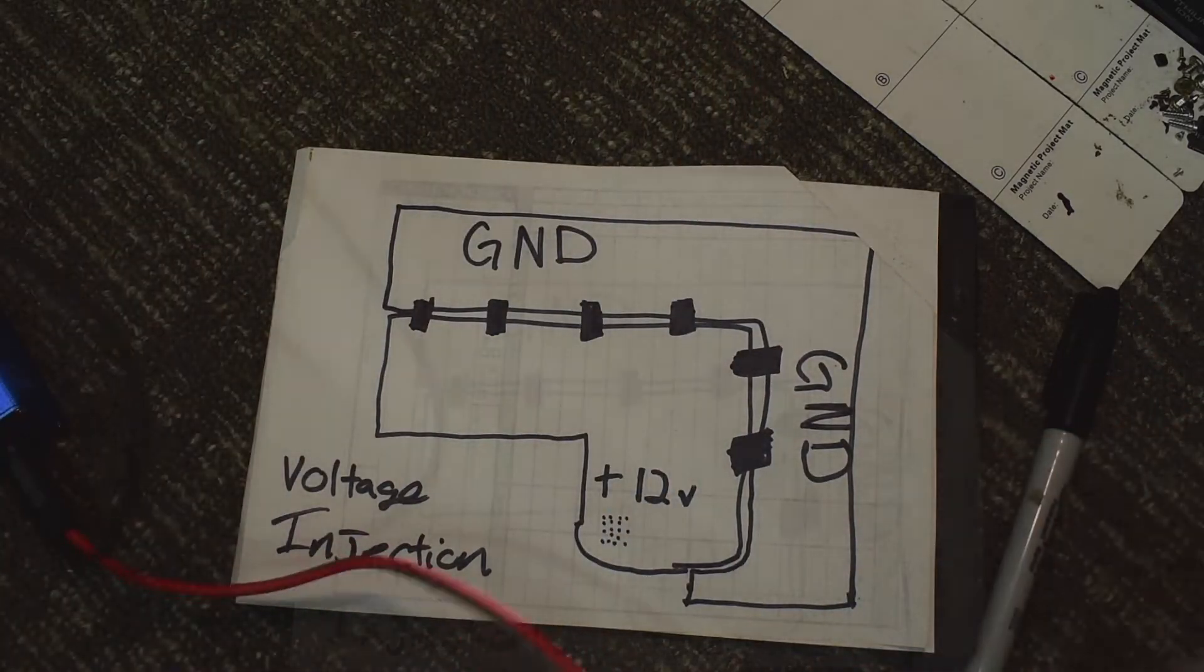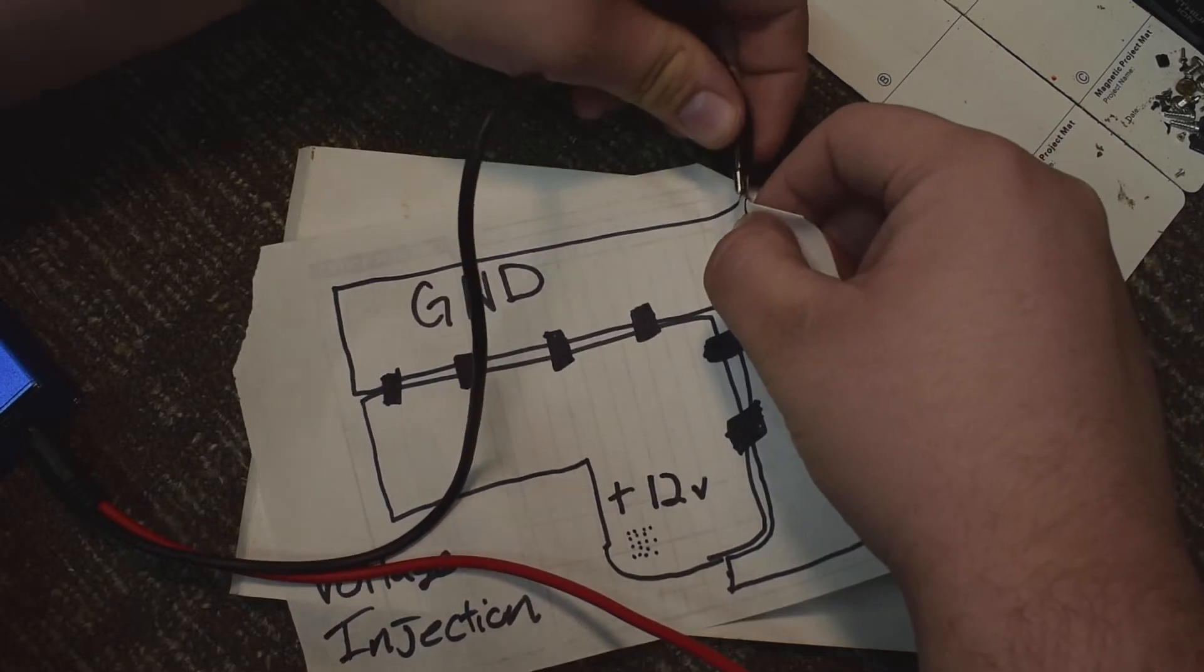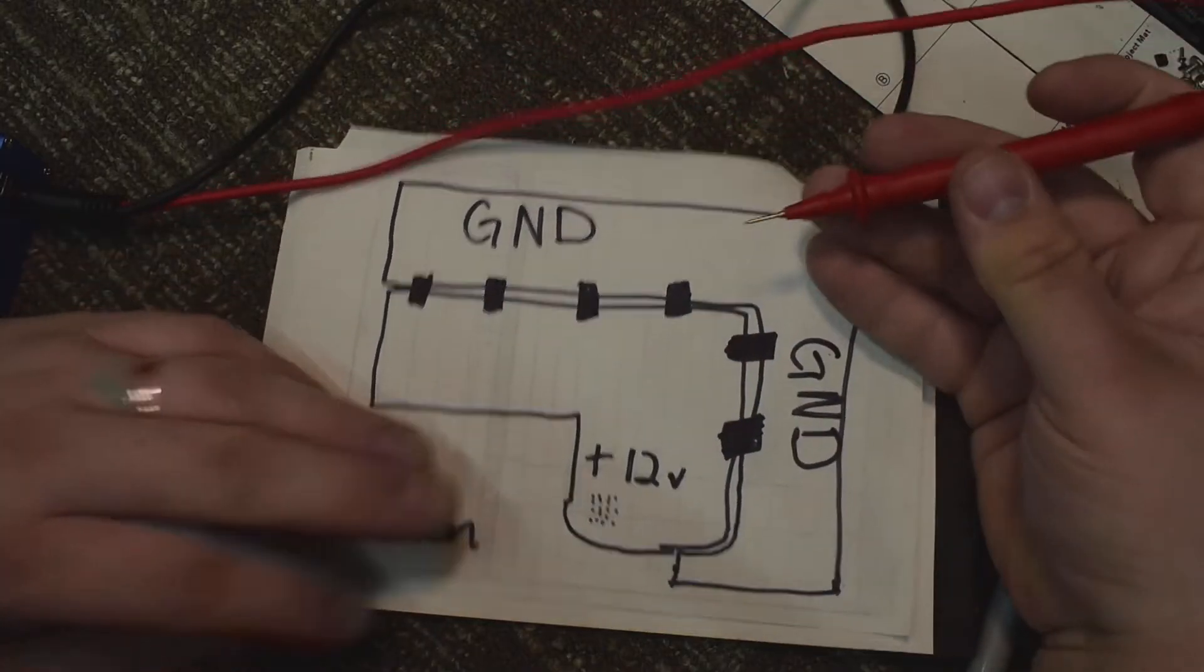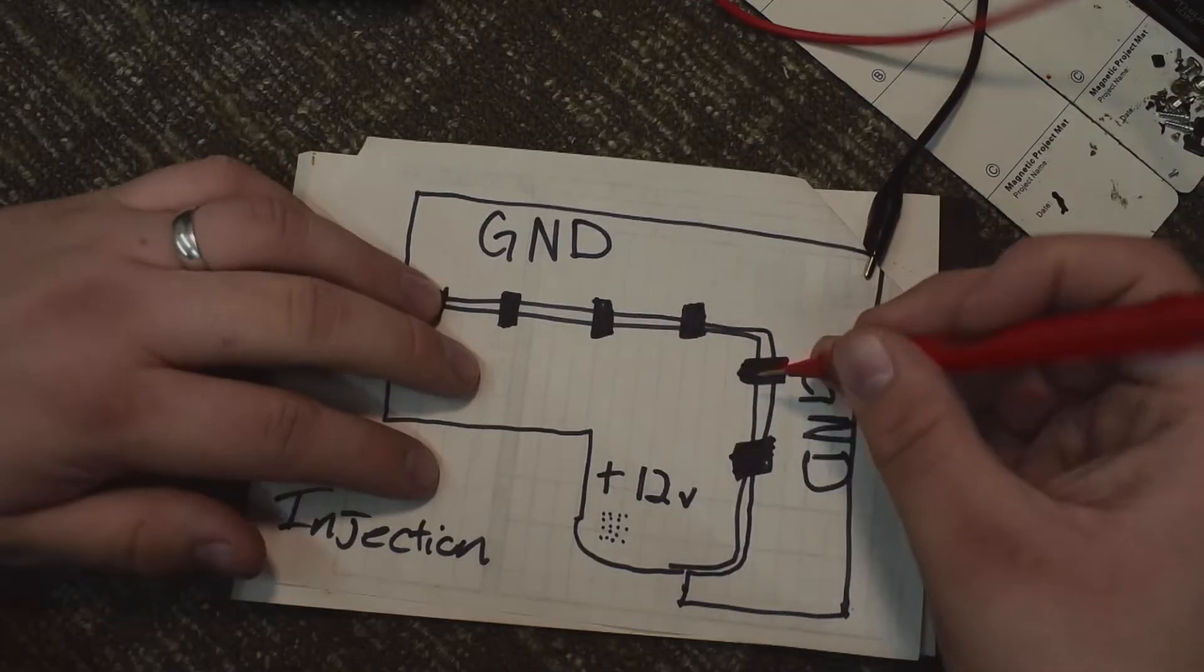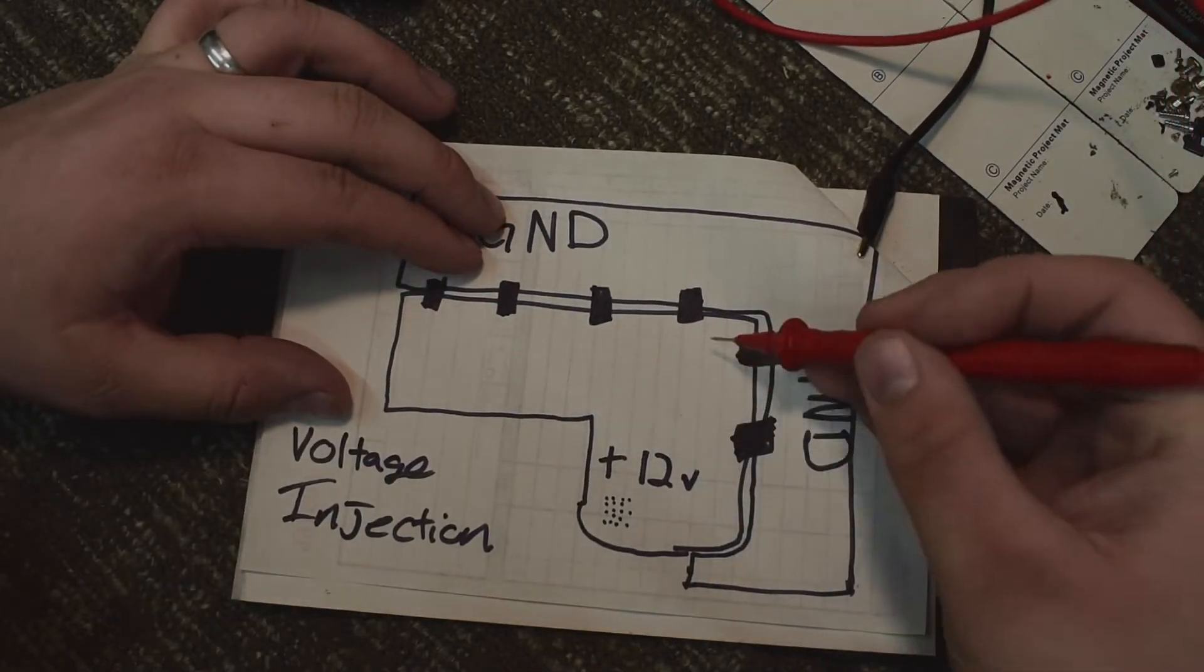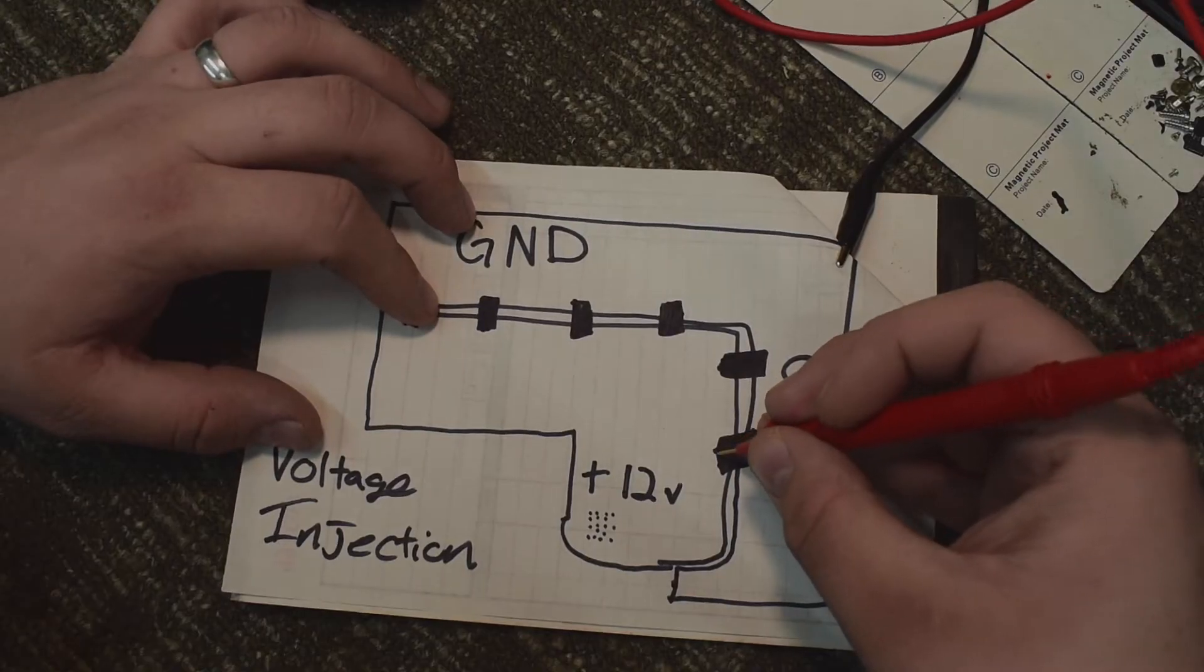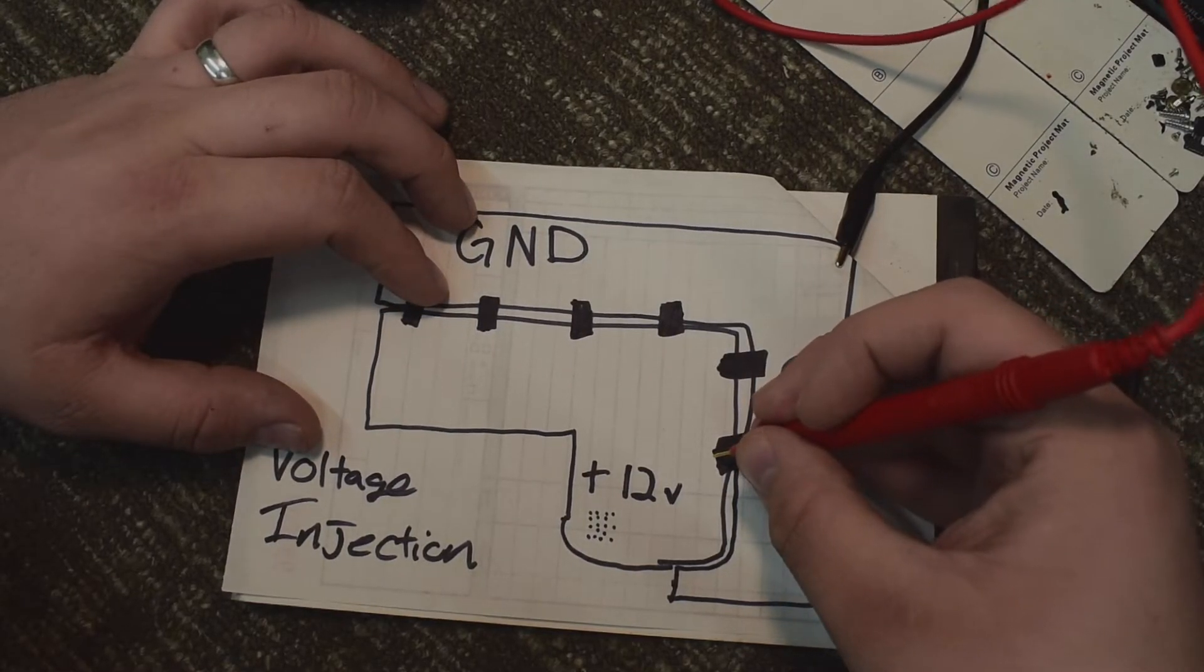Now the way this works is we're going to connect our ground, turn the voltage injection tool on, and then on our positive rail we're going to touch our shorted component on the positive line, the positive side.